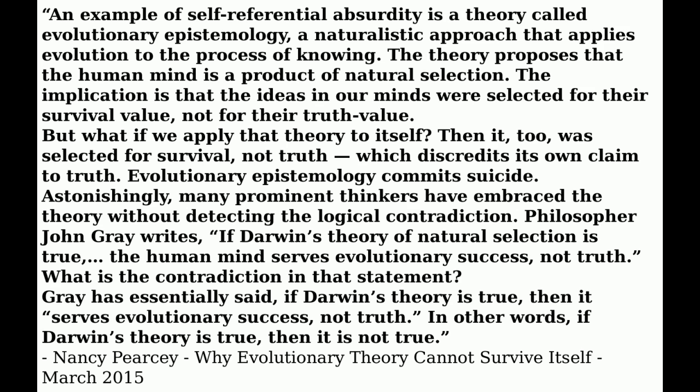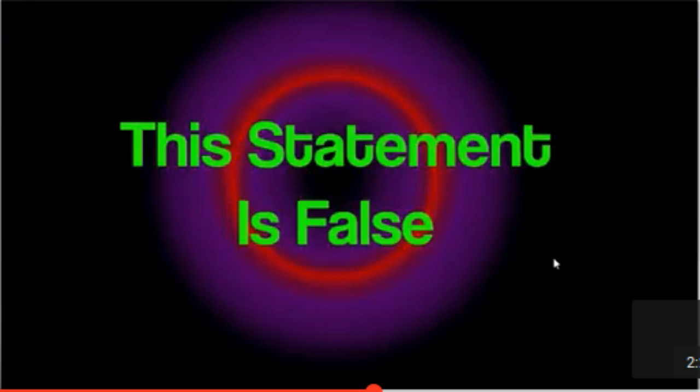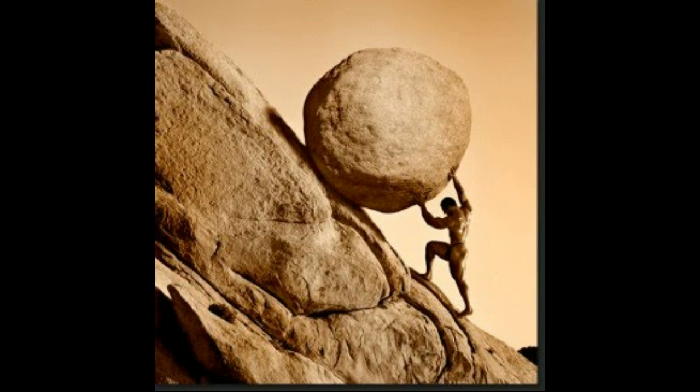This is kind of like the liar's paradox: 'This statement is a lie.' If the statement is true, then as it says, it's not true — it's a lie. This is one of the standard tools in any philosophical toolbox for testing ideas. The technical term for it is self-referential absurdity, meaning that when a theory applies its own definition of truth to itself, it undercuts itself.